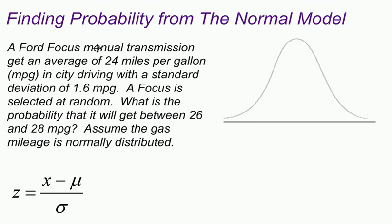A Ford Focus manual transmission gets an average of 24 miles per gallon in city driving with a standard deviation of 1.6 miles per gallon. A Focus is selected at random. What is the probability that it will get between 26 and 28 miles per gallon? Between is a key word there. Assume the gas mileage is normally distributed. That's important too, because if it wasn't normally distributed, then we wouldn't be able to use the normal model.